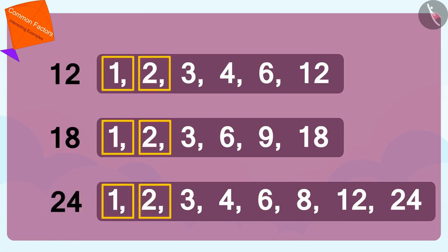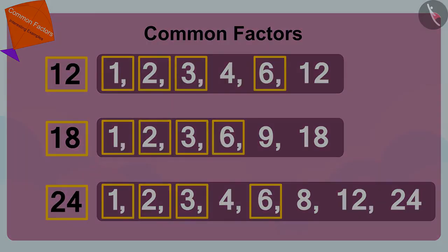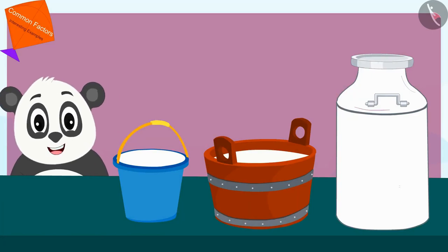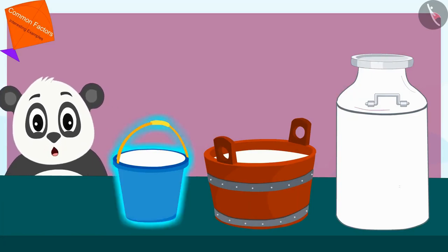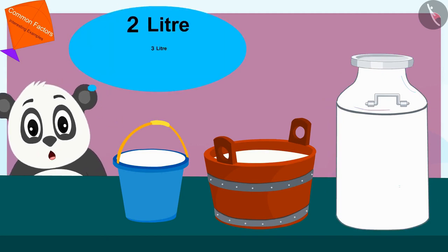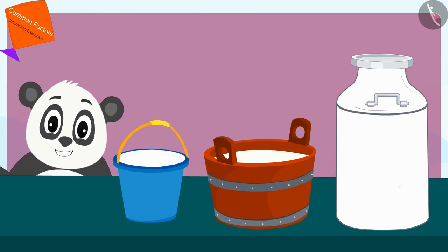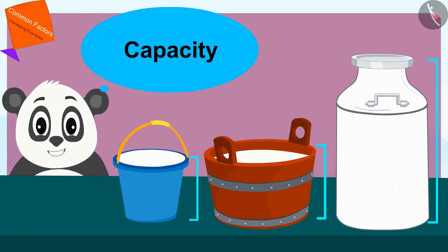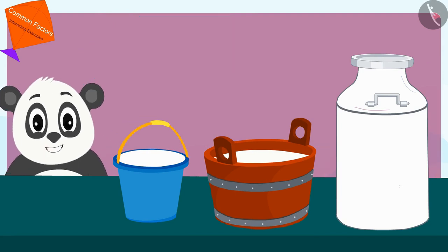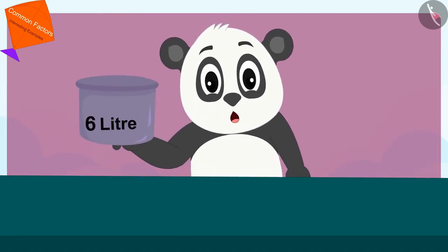1, 2, 3 and 6 are common factors of these numbers. I can easily measure the milk filled in these pots using a pot of 2, 3 or 6 liters. And the largest of these is a capacity of 6 liters, so we can definitely measure the milk filled in these utensils with a 6 liter vessel.